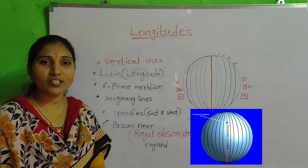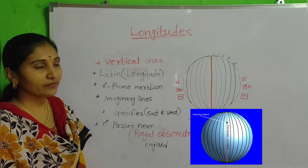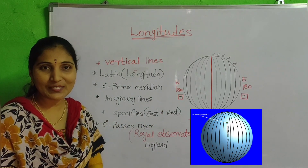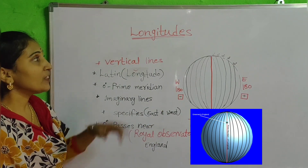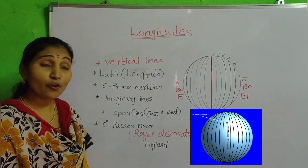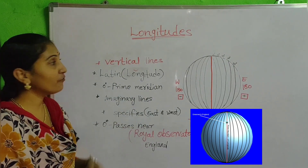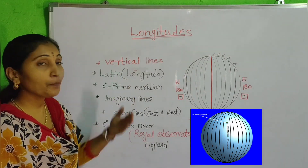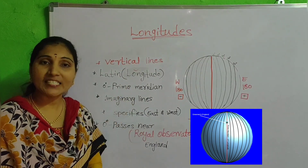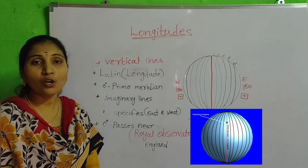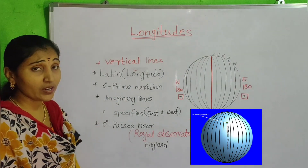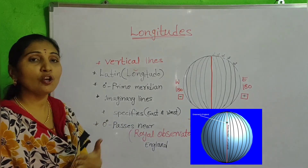So what are the longitudes? You can observe on the board — a circle is drawn and the lines are drawn. Those are the longitudes, because the longitudes are the imaginary lines which are drawn over the globe vertically, means from top to bottom. The word longitude is derived from the Latin word 'longitudinal', and so onwards it was called a longitude.